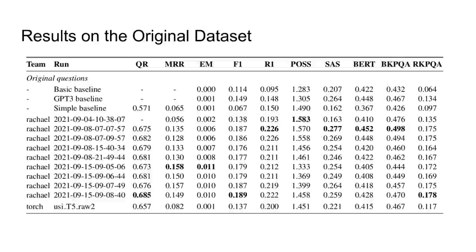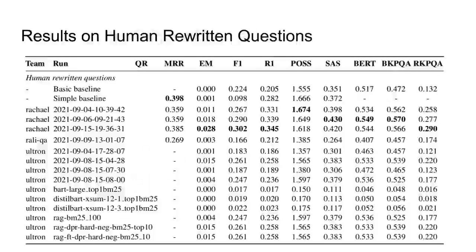For question answering, the baselines are beaten by most runs. However, we find that the rankings of the different metrics often disagree, leaving an otherwise inconclusive image. As an extreme case, the runs by Team Rachel that achieved the highest part of speech score actually got the lowest score of their runs for most other metrics.